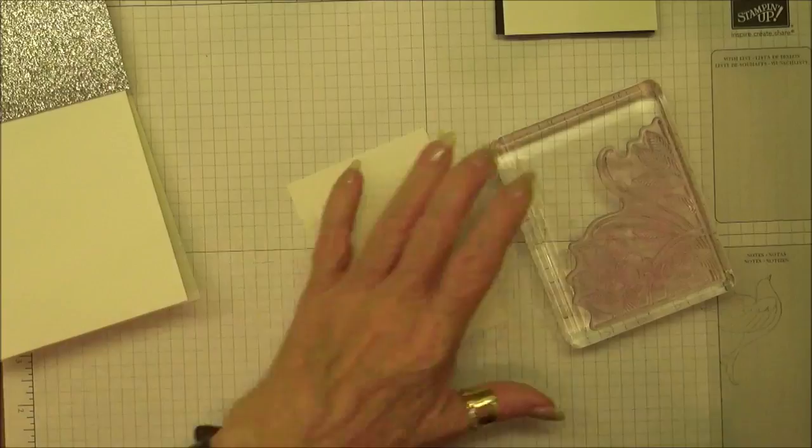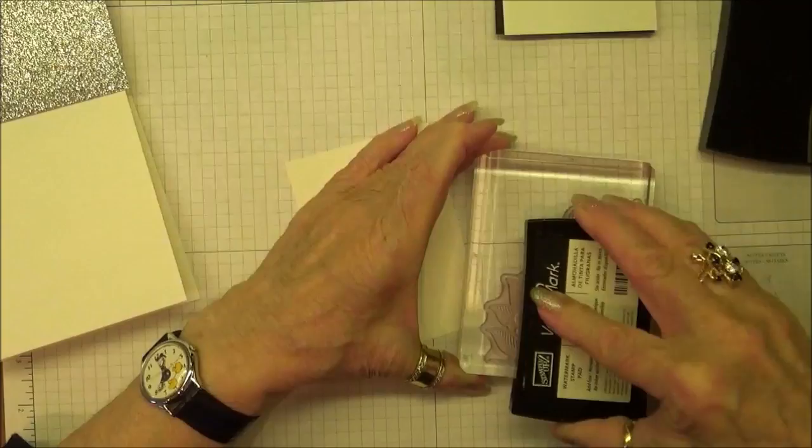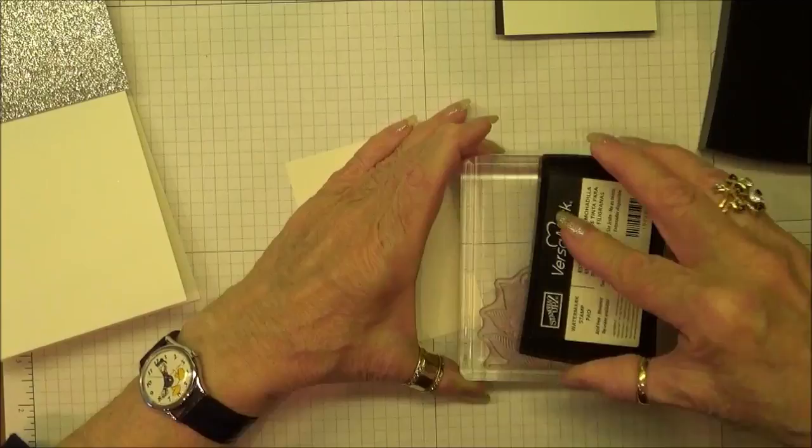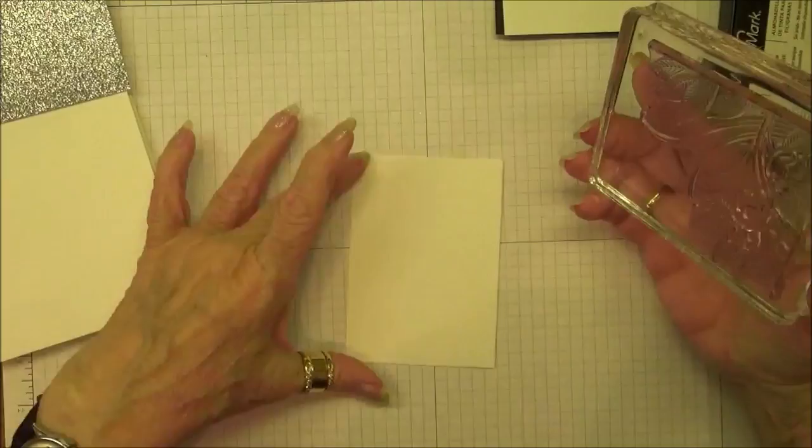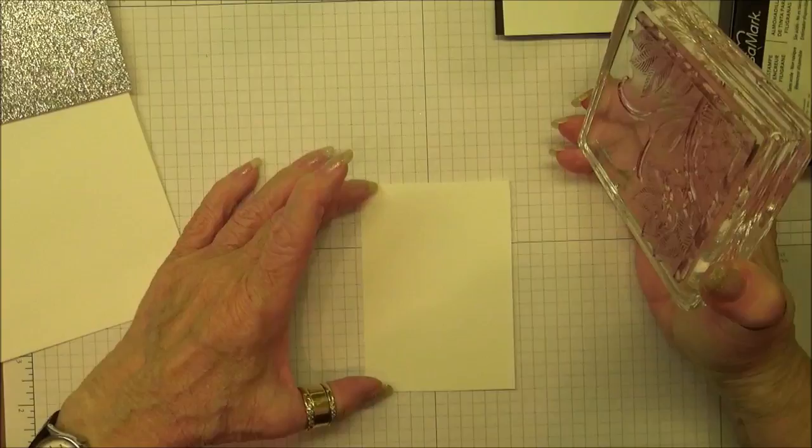I'm going to be using the VersaMark. This is really great if you've not embossed before. The VersaMark ink is a sticky ink, so when you apply it to the cardstock it leaves a sticky residue so the embossing powder fits.